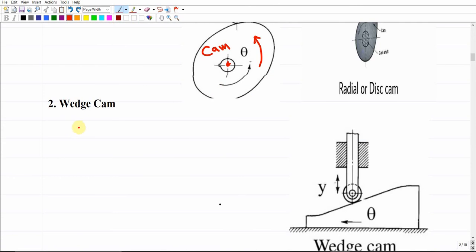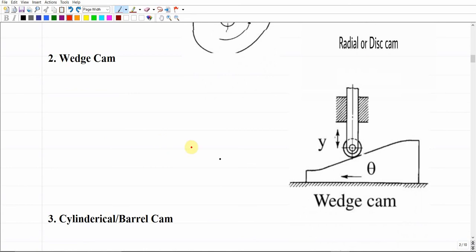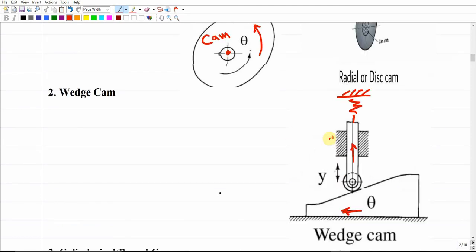There is another type of cam based on its shape known as the wedge cam, which has a sharp inclined surface. As we move the cam in one direction, the follower is pushed up or down. Moving the cam in the opposite direction gives a descent to the follower. This type converts translational motion of the cam into translational motion of the follower, and it has some limitations — to switch direction, you have to switch the cam direction.